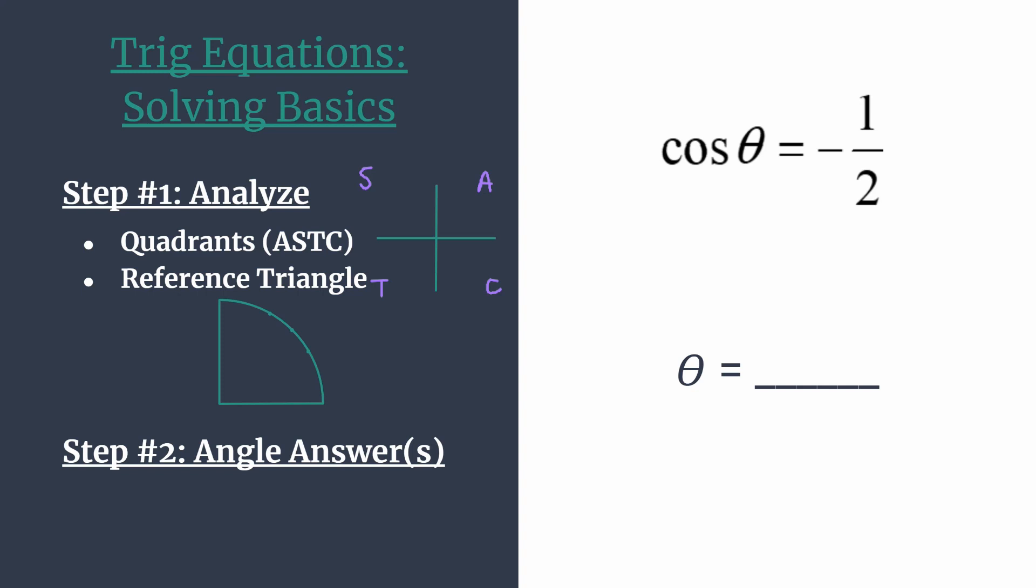So looking over to our equation, we want cosine of angles where we have a negative value, negative one-half. So we know that cosine is positive in quadrants one and four. And since we want negative values for cosine, we must be working in quadrants two and three.